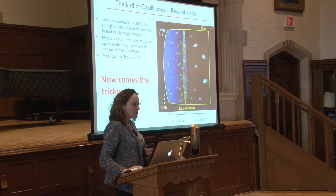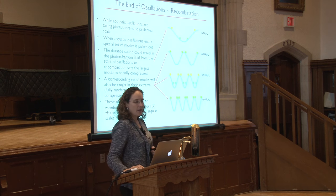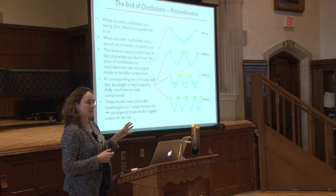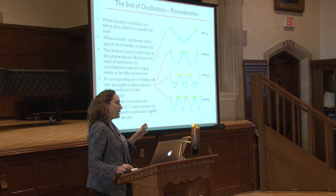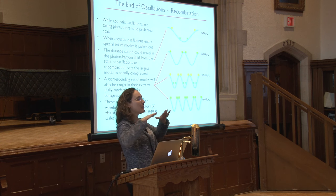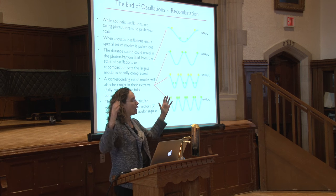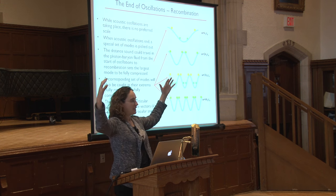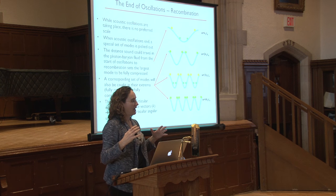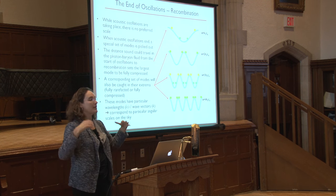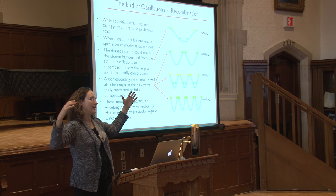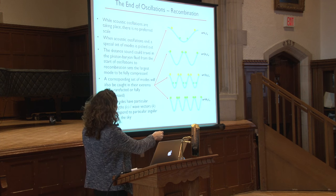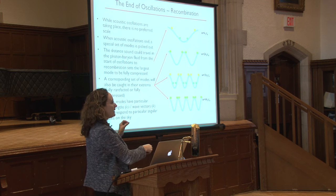As things are being drawn into potential wells, the oscillations were driven by photon pressure pushing back out. When the photons escape, there is no more pressure pushing back out, and you start to see condensation in those potential wells that's no longer oscillating. When the acoustic oscillations end, it picks out a preferred set of scales. At any particular moment there will be a largest scale that has had time from the end of inflation to now to have compressed once, and then ones in between.